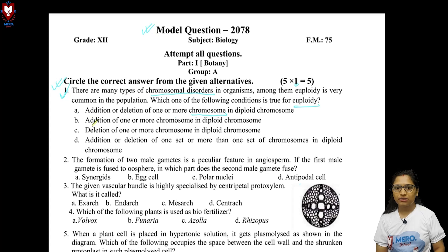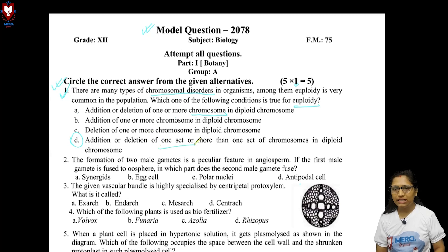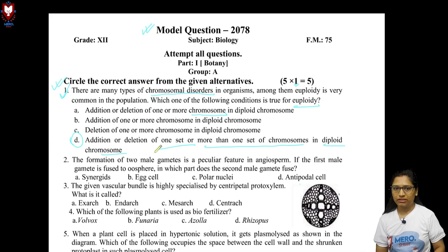Option B shows addition of one or more chromosomes in the diploid chromosome — that is an aneuploidy condition. Option C shows deletion of one or more chromosomes in the diploid chromosome — also aneuploidy. Option D shows addition or deletion of one whole set or more than one set of chromosomes in the diploid chromosome — that is the euploidy condition. So the answer to question number 1 is option D.